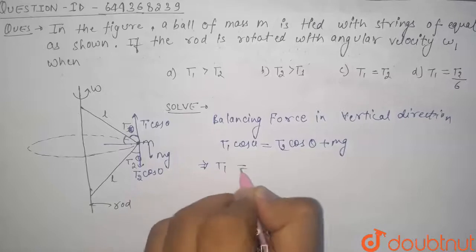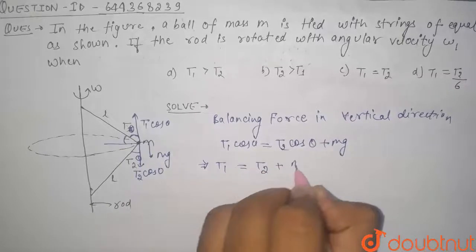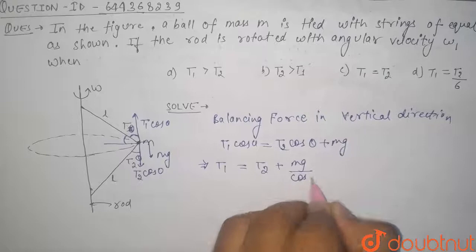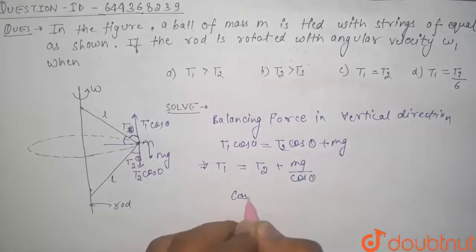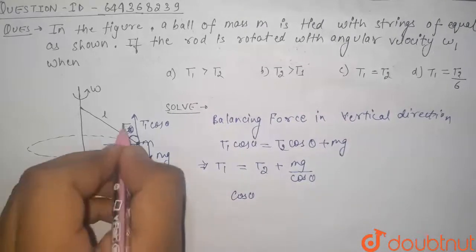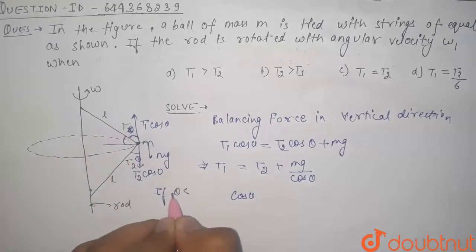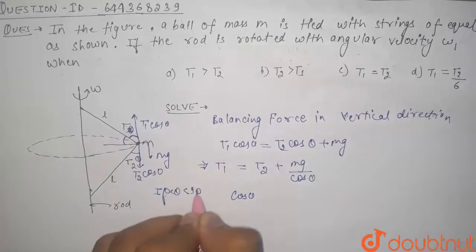We can say that T1 cos theta is equal to T2 cos theta plus mg. Now divide the whole equation by cos theta. It will become T1 is equal to T2 plus mg divided by cos theta.